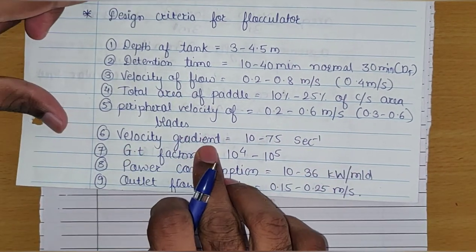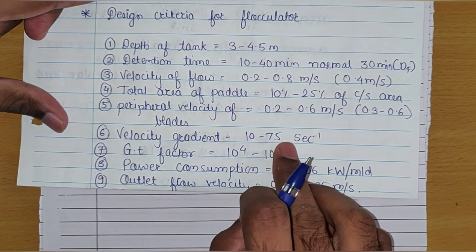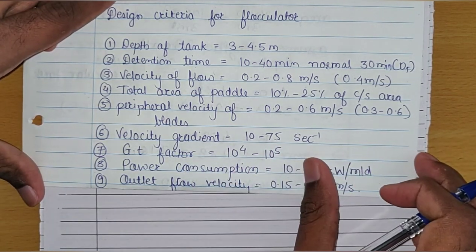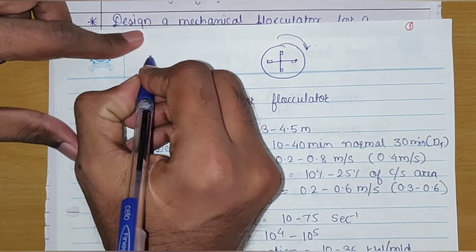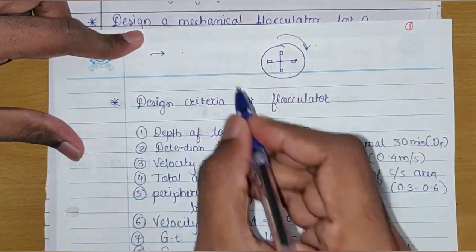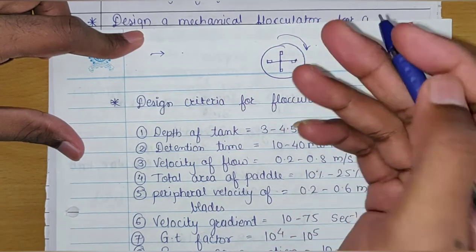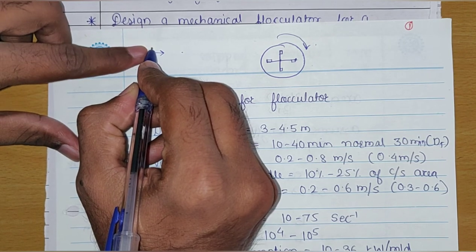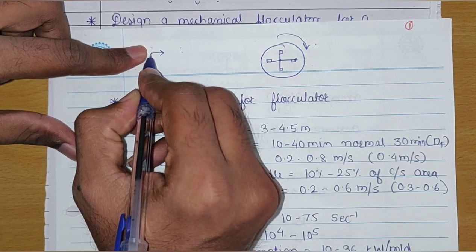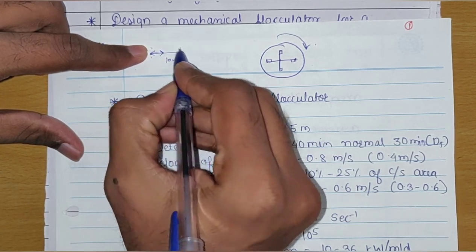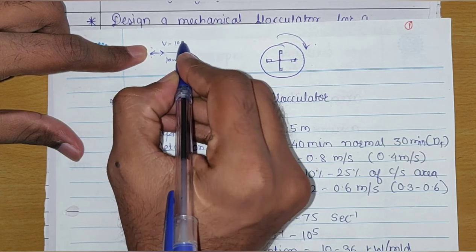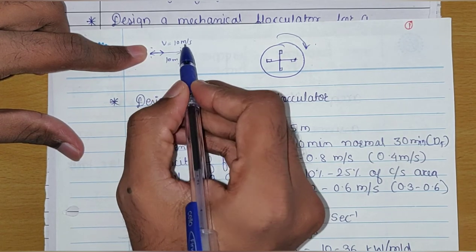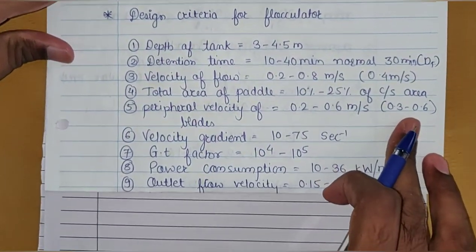The velocity gradient should be in the range of 10 to 75 per second. Velocity gradient means the rate of change of velocity with respect to distance. For example, if water is flowing from one point to another and the velocity is gradually changing, the velocity gradient is the rate of change of velocity from one point to another with respect to that distance. Suppose the distance is 10 meter and the velocity is 10 meter per second — the velocity gradient will be 10 divided by 10, that means 1 per second.